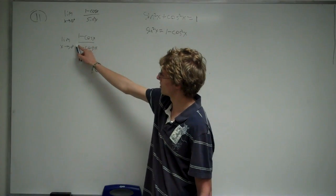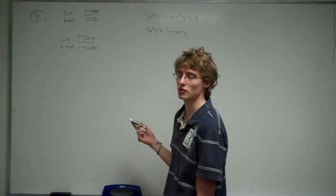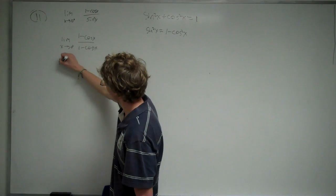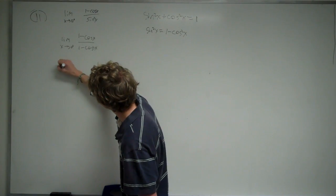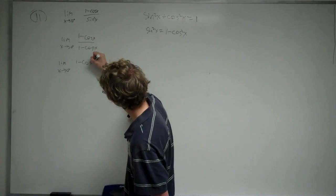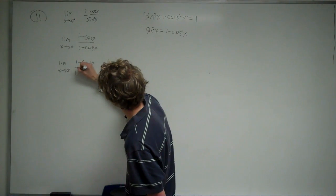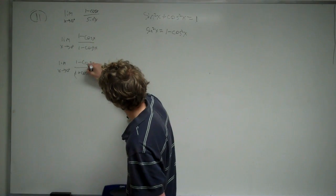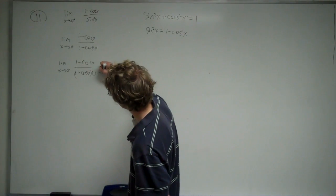Now, this denominator here, 1 minus cosine squared of x, that is the difference of squares, so we can actually factor this out. When we factor it out, we get 1 minus cosine of x, 1 over 1 plus cosine of x, times 1 minus cosine of x.